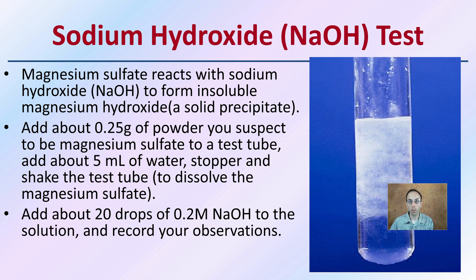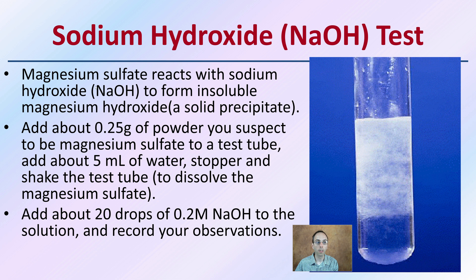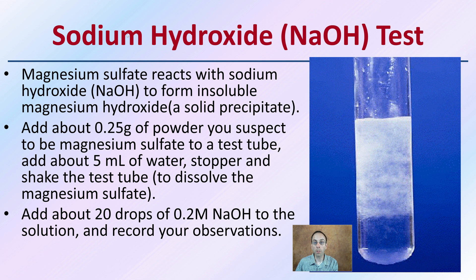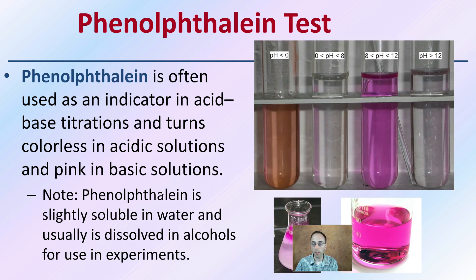Now the sodium hydroxide (NaOH) test. Magnesium sulfate reacts with sodium hydroxide to form insoluble magnesium hydroxide, which is a solid precipitate. Add about a quarter gram of the powder suspected to be magnesium sulfate to a test tube with five mL of water, stopper and shake to dissolve, then add about 20 drops of 0.2 molar sodium hydroxide to the solution and record your observations.